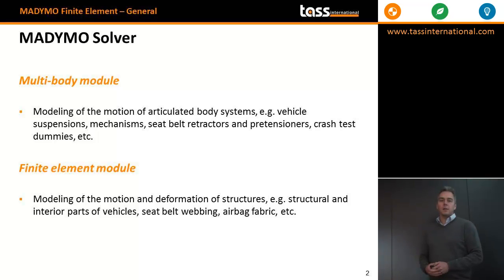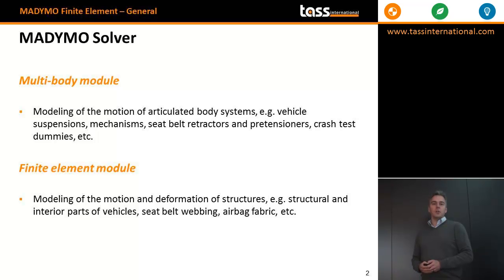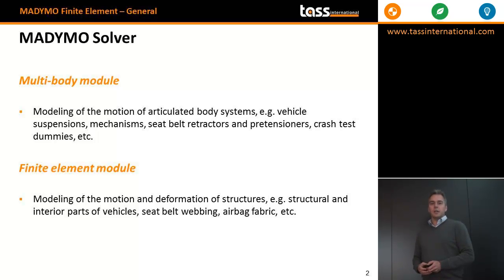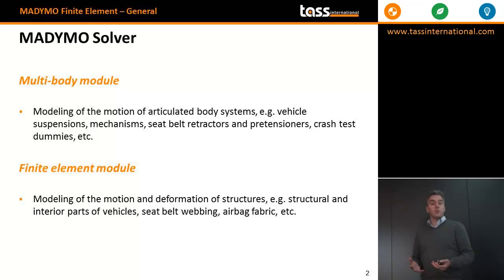In the MARIMO solver we have two modules: the multibody module and the finite element module. The multibody module is mostly used for modeling articulated body systems, such as vehicle suspensions, mechanisms, seat belt retractors, etc.